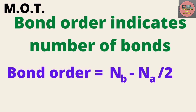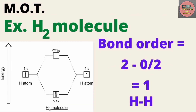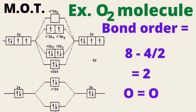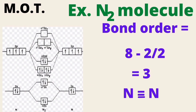So in the case of hydrogen molecule, bond order is 1, meaning single bond. In the case of oxygen molecule, bond order is 2, meaning double bond. In the case of nitrogen molecule, bond order is 3, meaning triple bond.